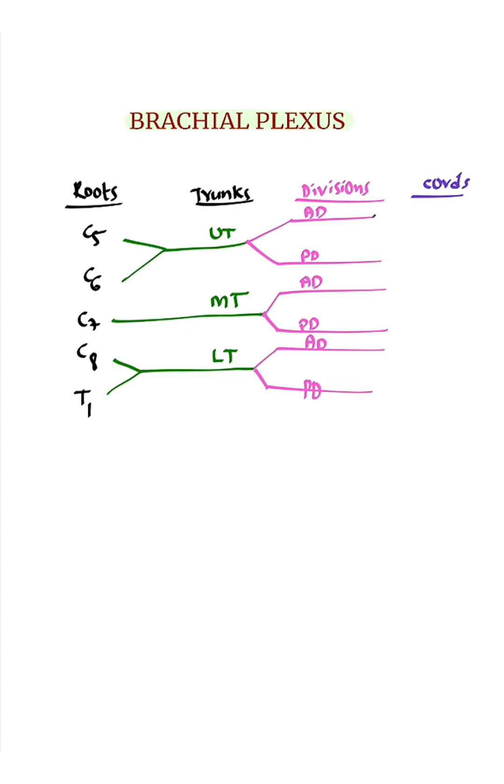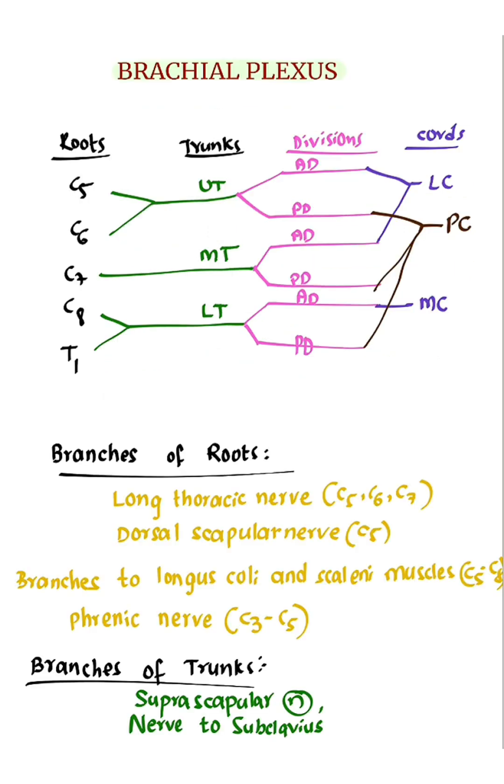Anterior division of upper and middle trunk forms lateral cord. Anterior division of lower trunk forms medial cord. Posterior division of 3 trunks join to form posterior cord.